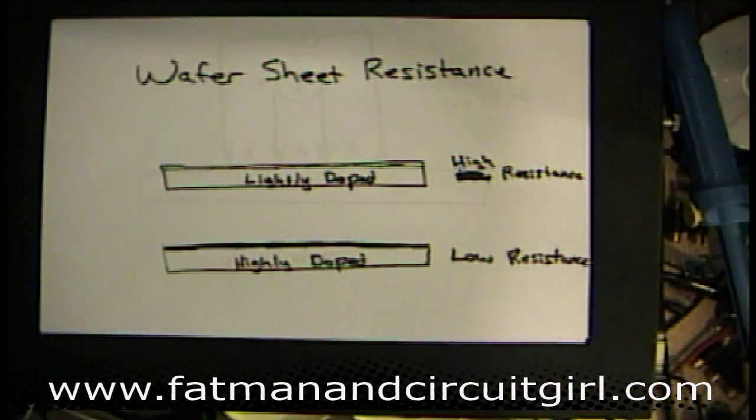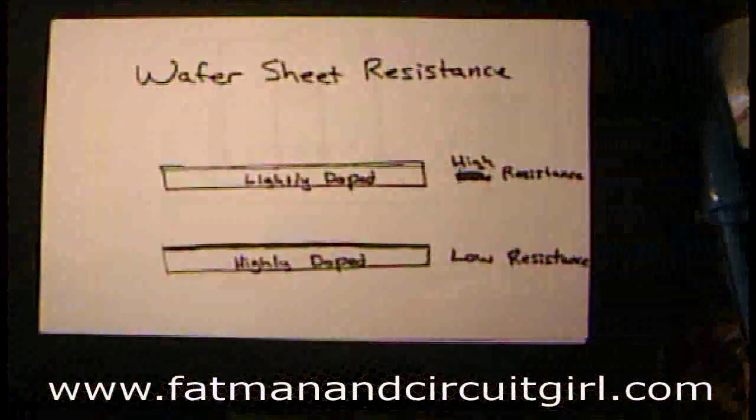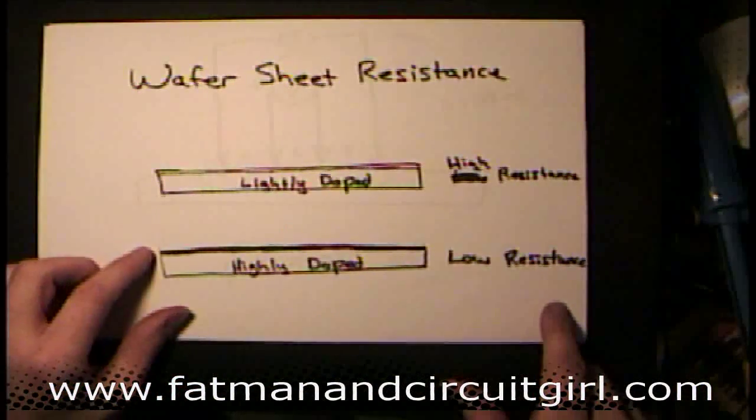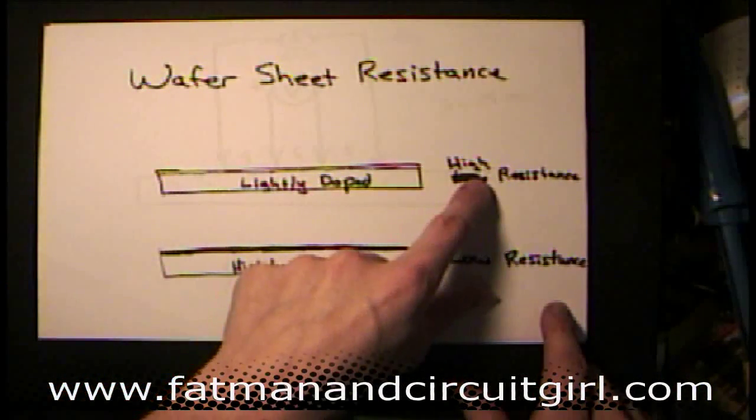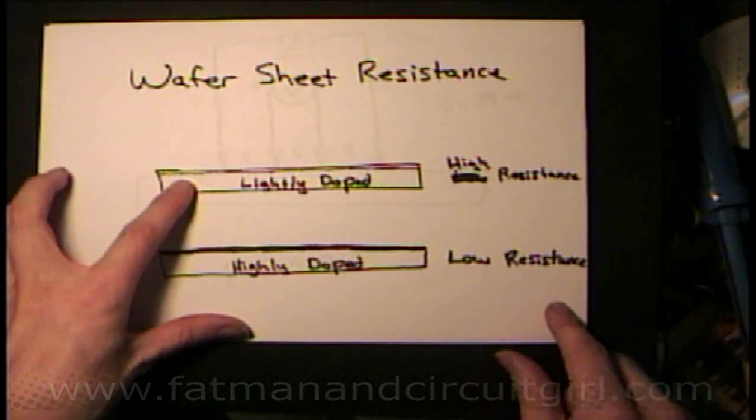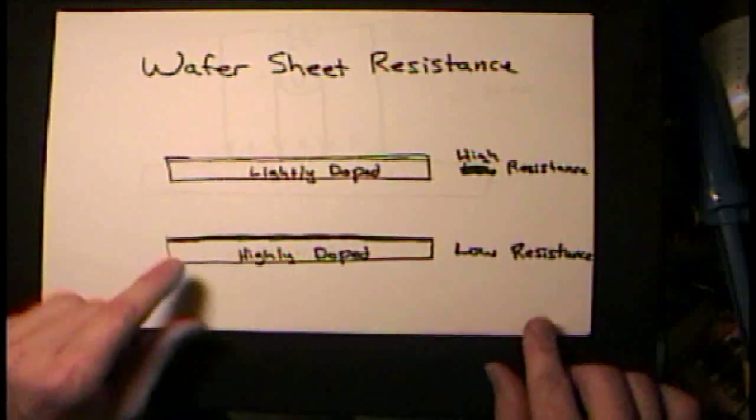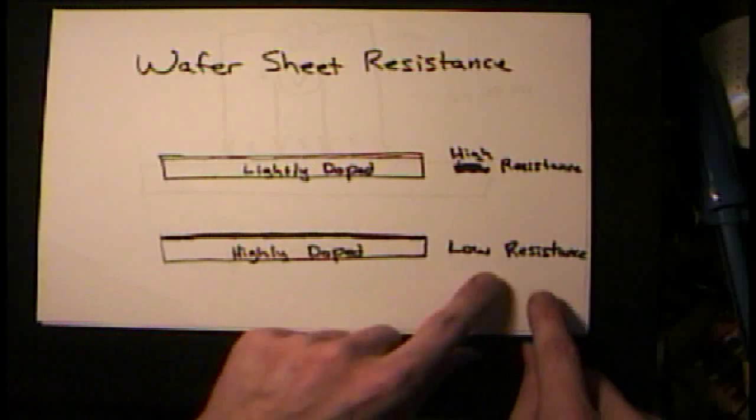When you receive these wafers, they're doped at different concentrations. Some of them are lightly doped, and they'll have a high resistance when you check them with an ohmmeter. And some of them will be highly doped, so they'll have a low resistance.